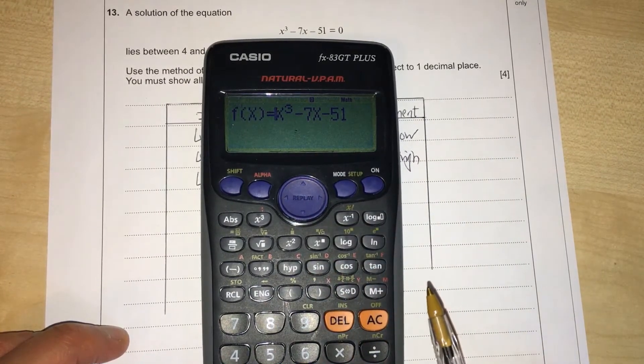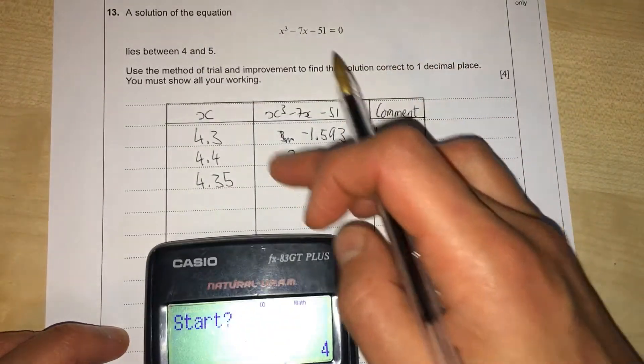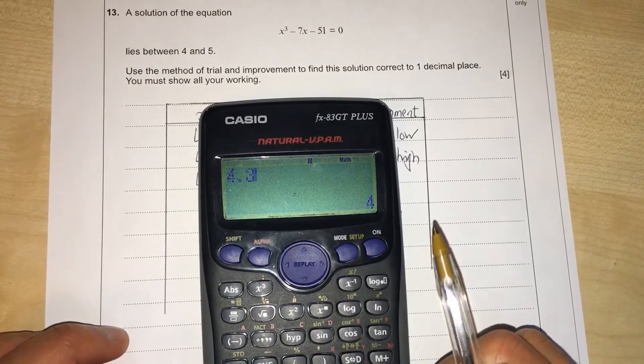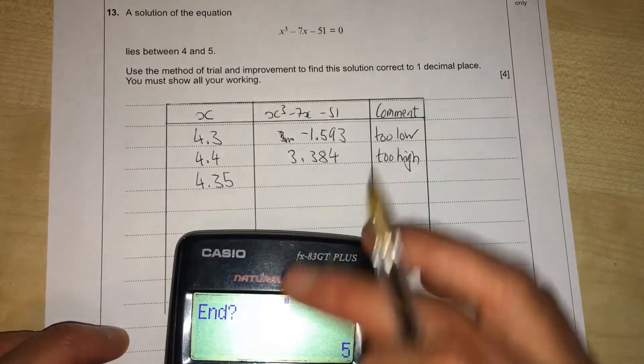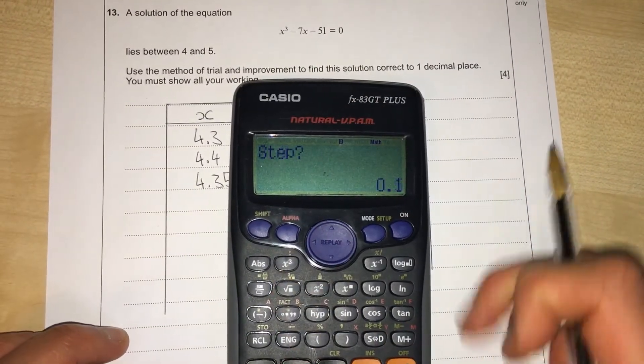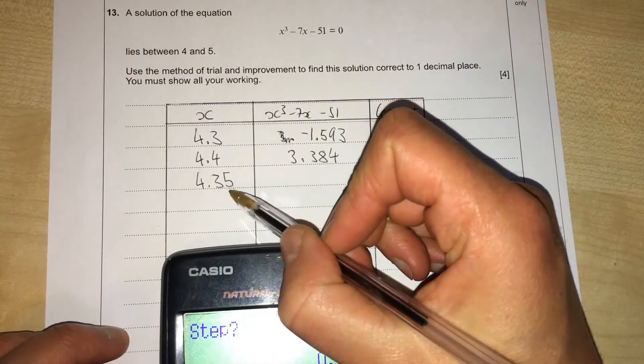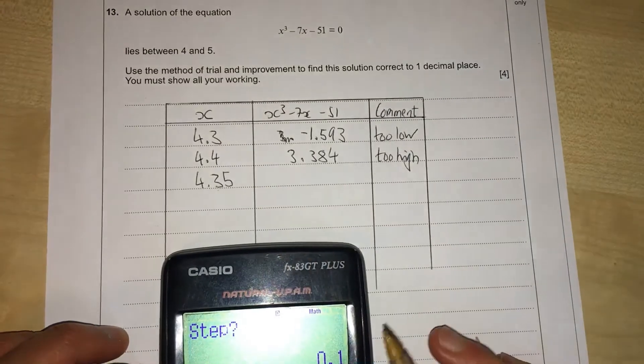With our function, press equals, but this time we want to start at 4.3. We type that in, press enter. We want to end at 4.4, press enter, and we want to go up in steps of 0.01 to get this extra decimal place.